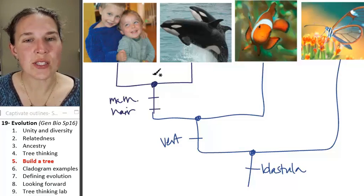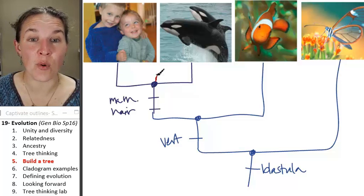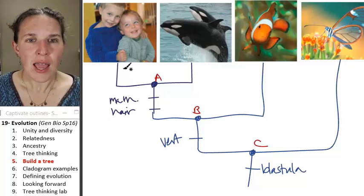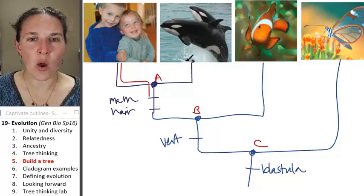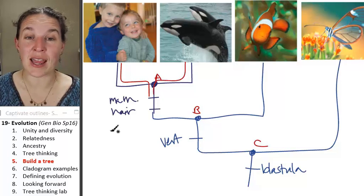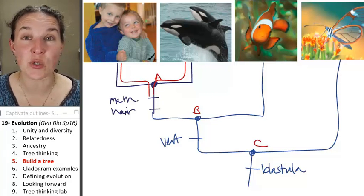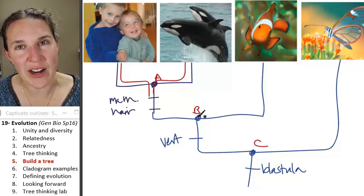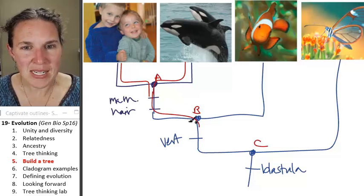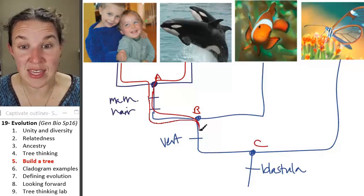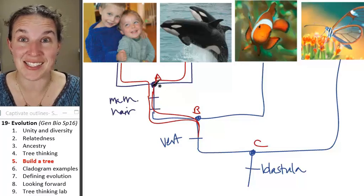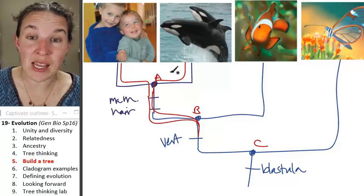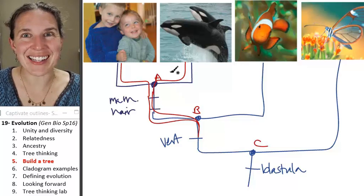Now, who's the most recent common ancestor of the boy and the whale? Ancestor A. Boy has ancestor A. Whale has ancestor A. The most recent common ancestor between these guys is ancestor A. They both also share ancestor B, but it's not the most recent common ancestor. They have a more recent common ancestor. And the more recent your common ancestor that you share with somebody, the more closely related you are to them.